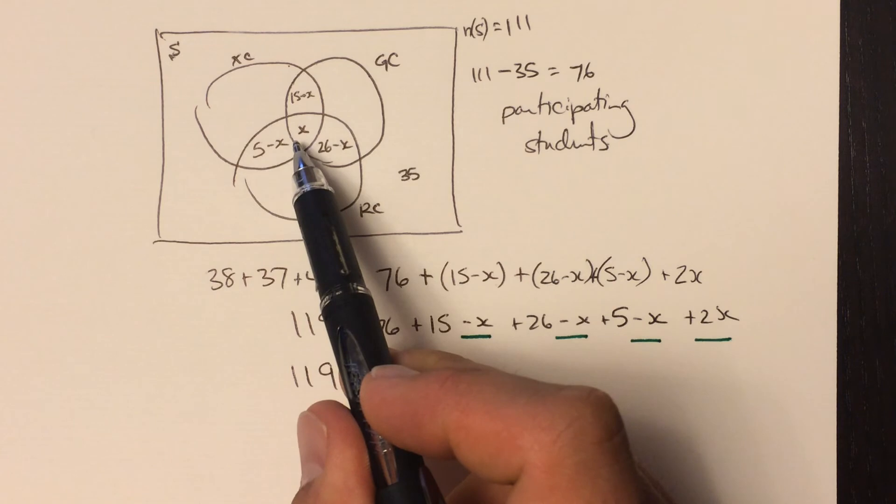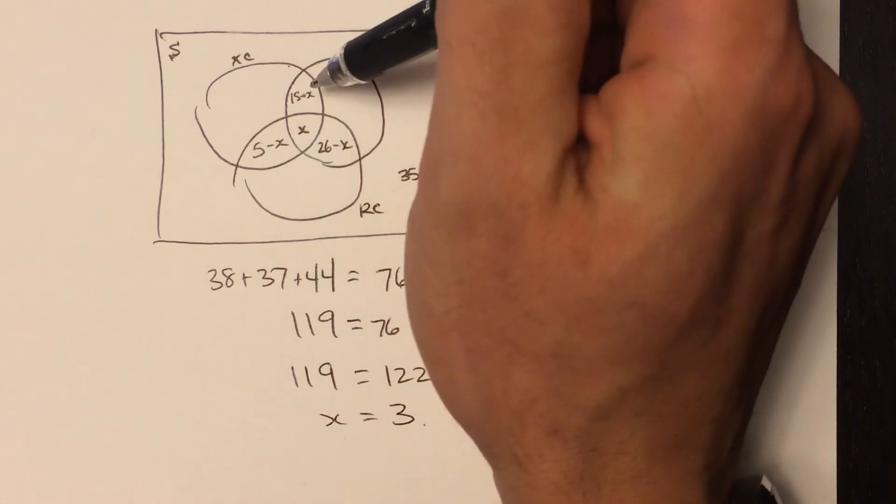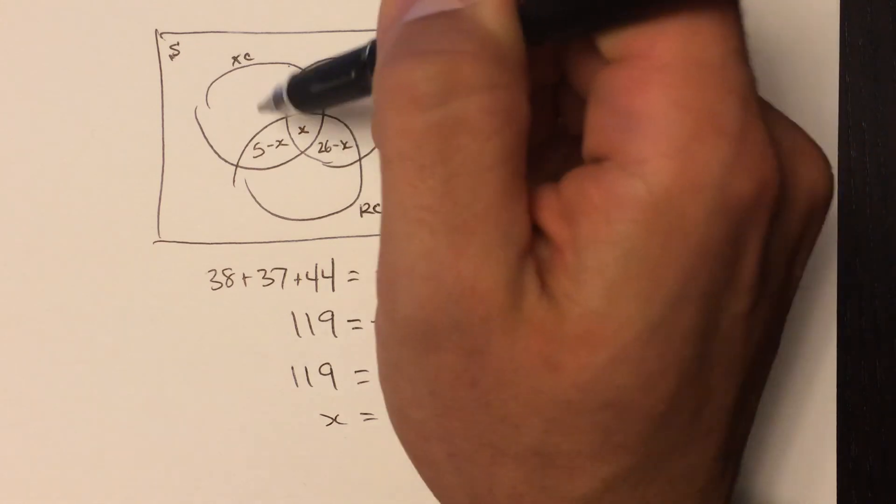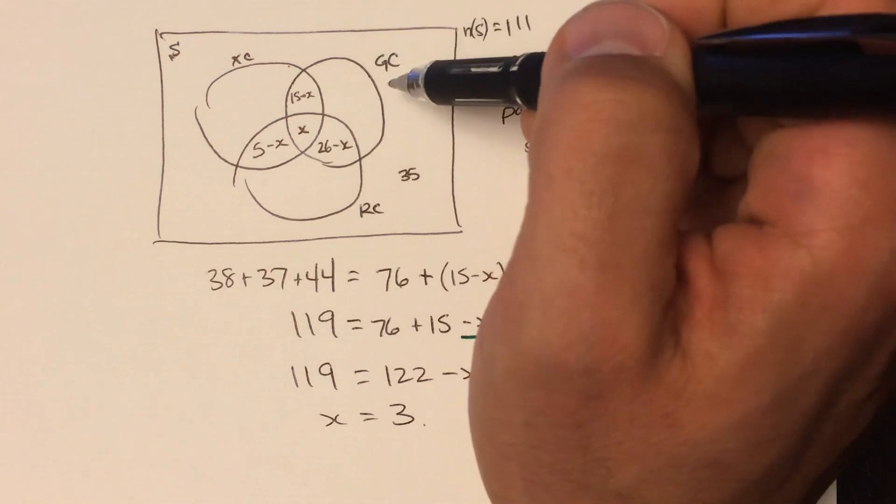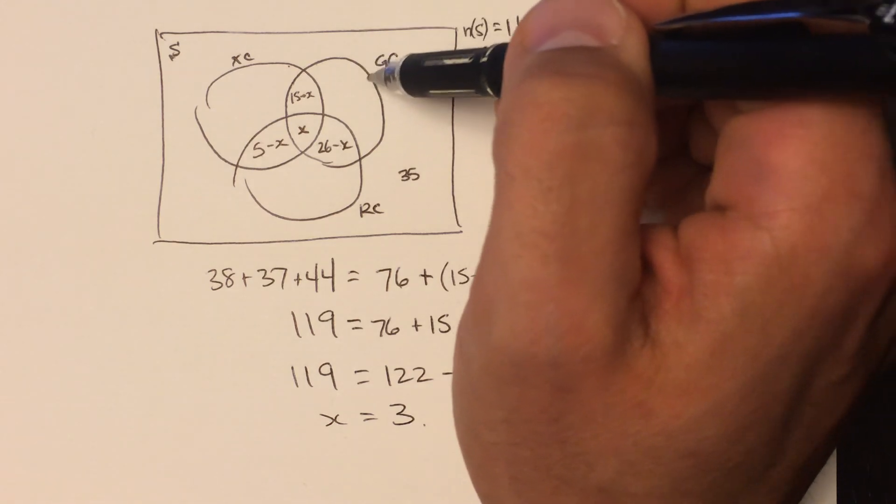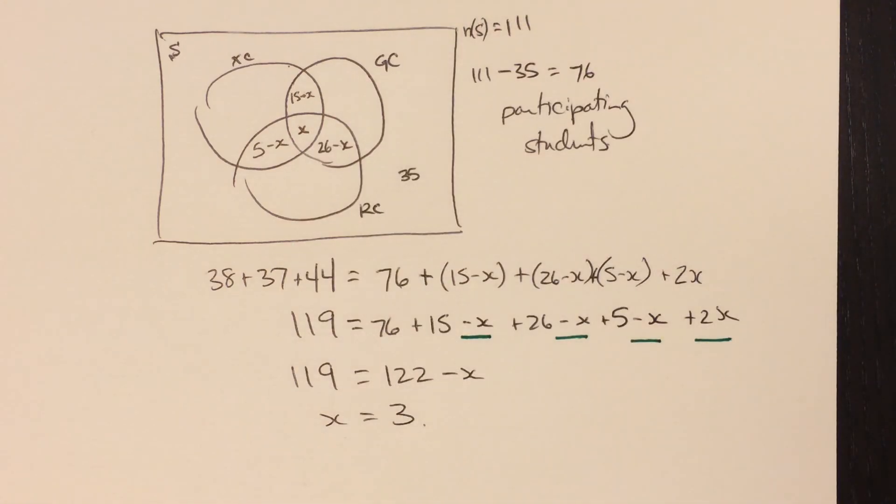That means there are three students in that center region here that participate in all three clubs. So then that means there are 12 here, 23 here, 2 here. And you can work out the values for the other regions, too, to see how many participate, for example, only in Guitar Club. So that's it. That's the end of the question.